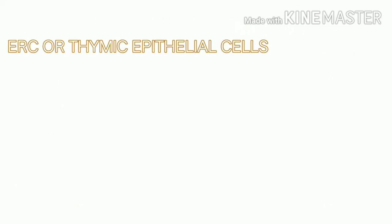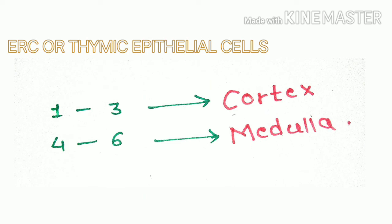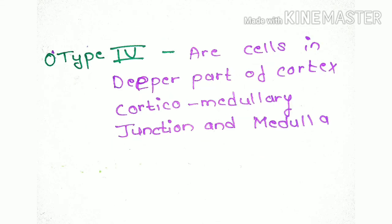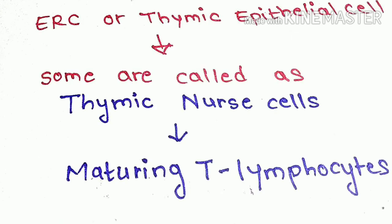The second important cell type is the epithelial reticular cell, also called the thymic epithelial cell. These are of six different types. The first three types are found in the cortex, while types four to six are found in the medulla. Type one cells are involved in forming the blood-thymus barrier. Type two and three are found in the inner and outer cortex and form the cytoplasmic reticulum. Type five and six are found in or around Hassall's corpuscles and destroy T cells with self-antigens by phagocytosis. Type four cells are found at the deeper cortex and medulla, at the corticomedullary junction. Some epithelial reticular cells are called thymic nurse cells as they help in the maturation of T lymphocytes.